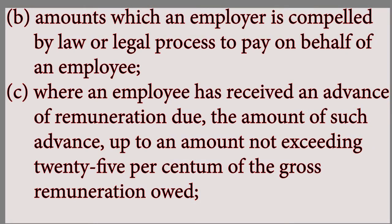Item B: amounts which an employer is compelled by law or legal process to pay on behalf of an employee. The employer can make deductions on your salary that are not only agreed upon but can result from being compelled by law or a legal process. When you look at your payslip, you will ordinarily find three deductions: NSSA, the AIDS levy, and pay as you earn.